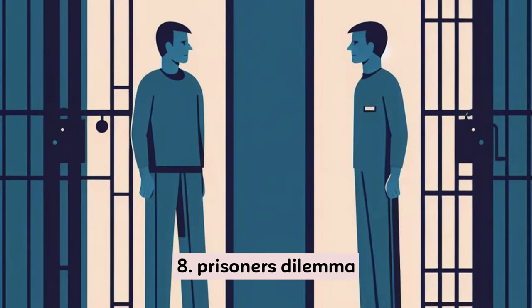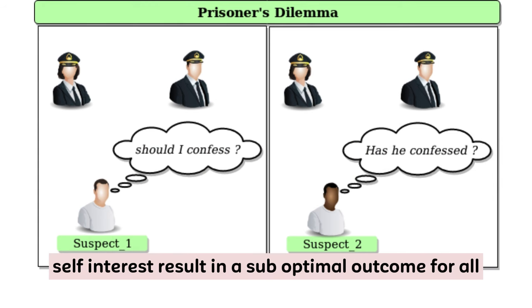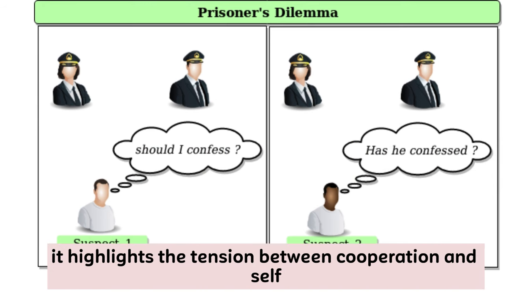8. Prisoner's Dilemma. A situation where individuals acting in their self-interest result in a suboptimal outcome for all. It highlights the tension between cooperation and self-preservation.